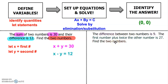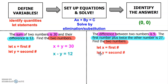In the second problem, read through it first: the difference between two numbers is 9; the first number plus twice the other is 27. Find the two numbers. Go back and highlight: the difference between the two numbers is 9; the first number plus twice the other number is 27. What am I trying to find? The two numbers — those are my quantities. The first equation is X minus Y equals 9. The second: X plus 2Y equals 27, because X is the first number and twice the other number means 2 times Y. Now I have my system to solve by substitution or elimination.